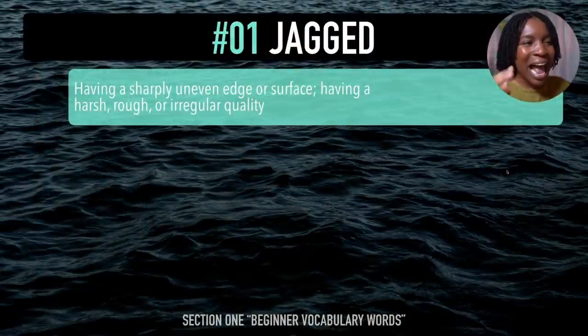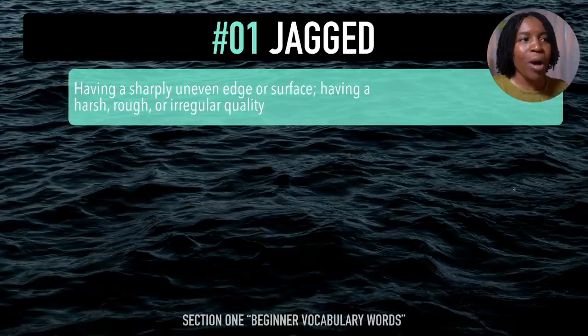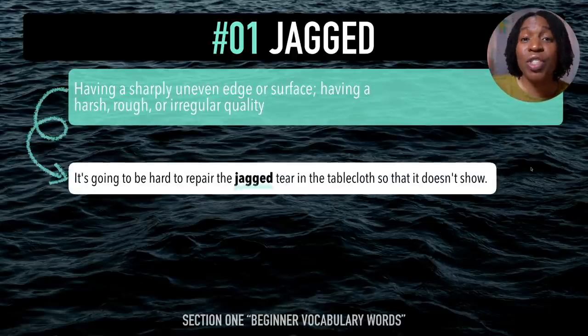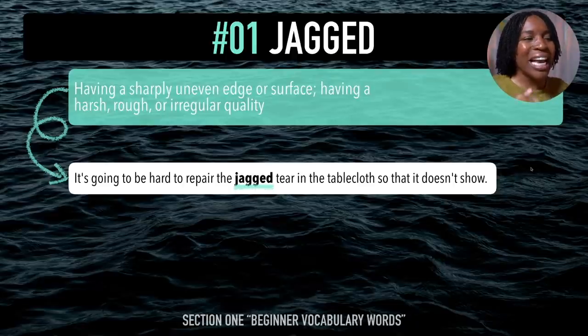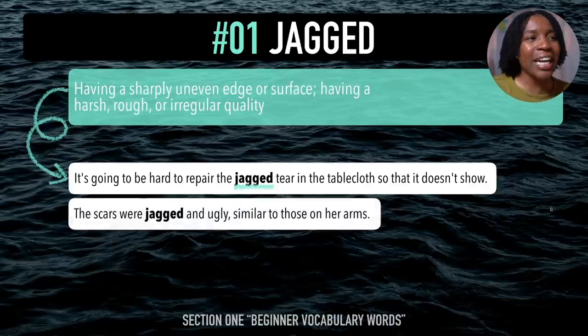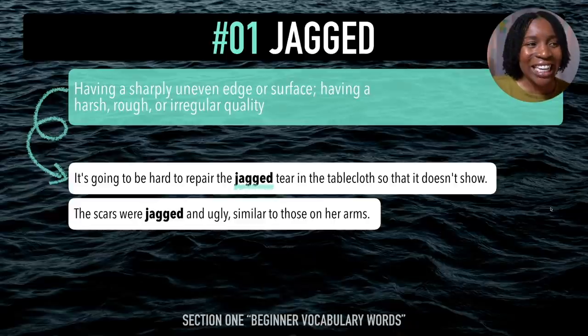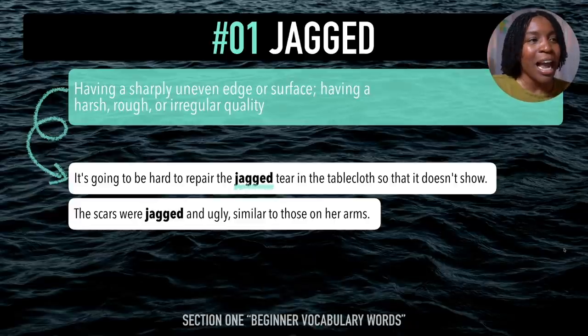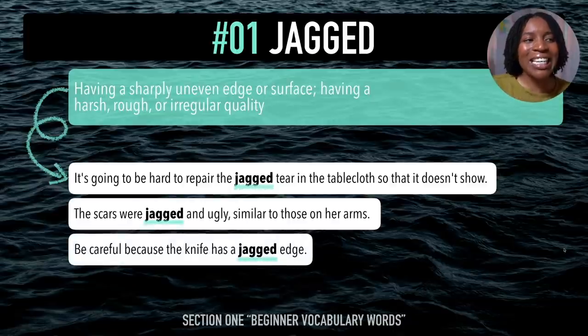The word 'jagged' means having a sharply uneven edge or surface, having a harsh, rough, or irregular quality. Example sentences: It's going to be hard to repair the jagged tear in the tablecloth so that it doesn't show. The scars were jagged and ugly, similar to those on her arms. Be careful because the knife has a jagged edge. After me, last time — jagged.